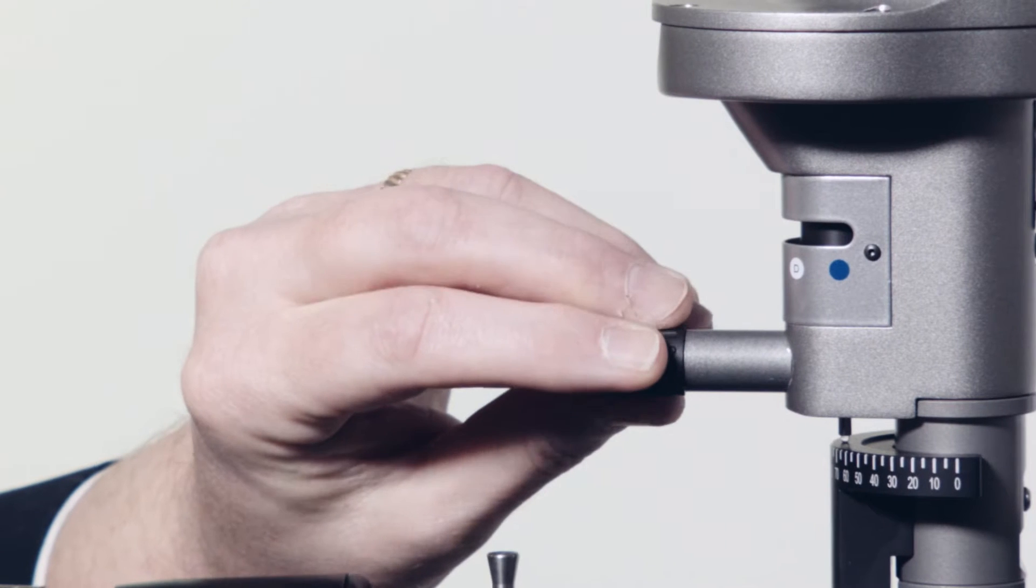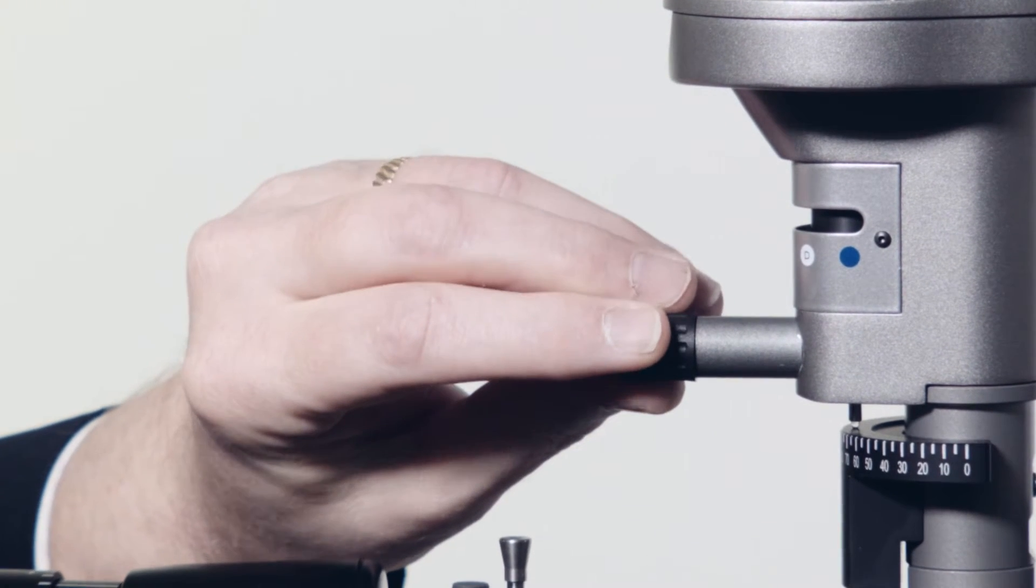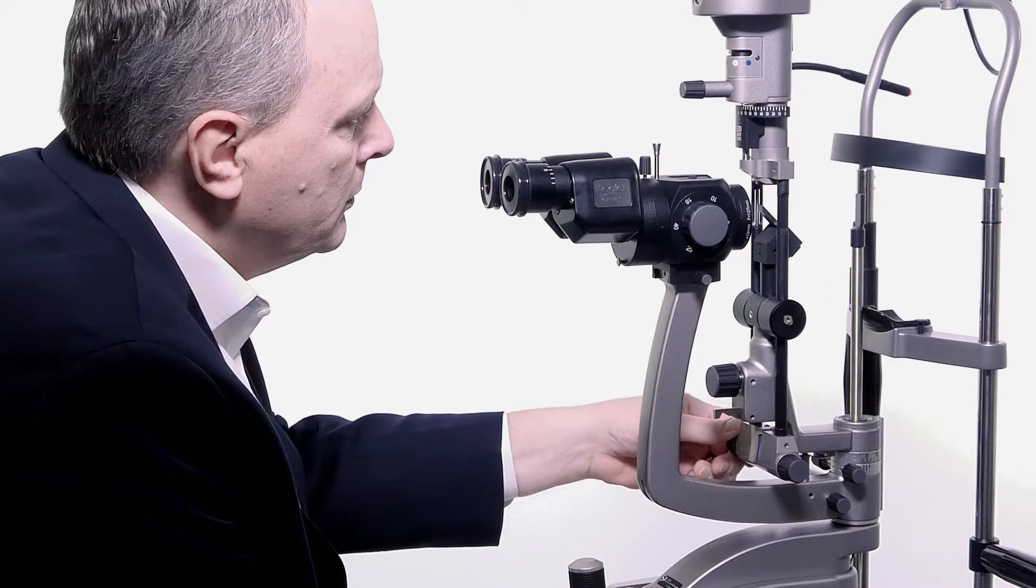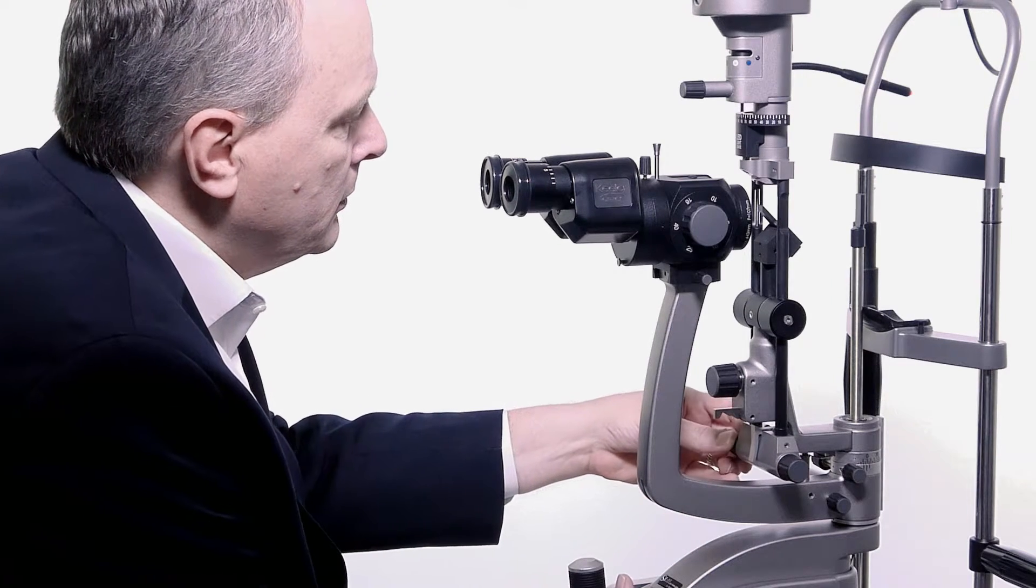Aperture can also be adjusted here. An exclusive 1mm square aperture can be used for uveitis assessment. Slit angle can be adjusted as required to perform the examination.